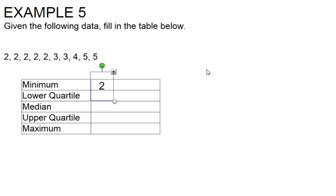And then to find the maximum, that's going to be the opposite, which is going to be our largest number in the data set, which, as we can see here, is obviously 5. So if I take this, I'm just going to put 5 for my maximum.